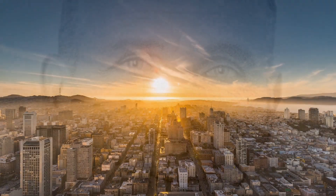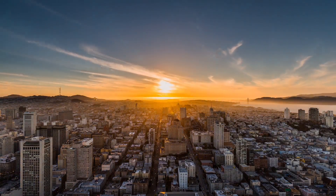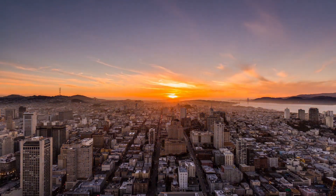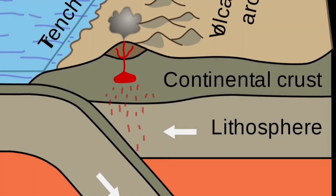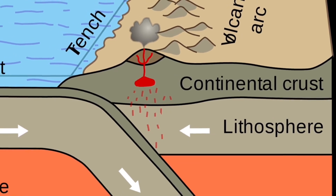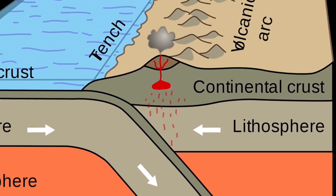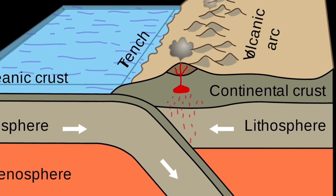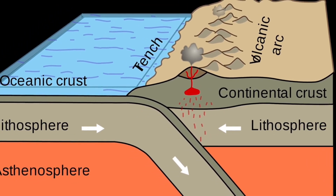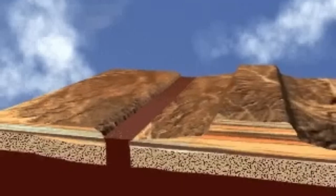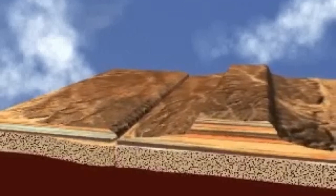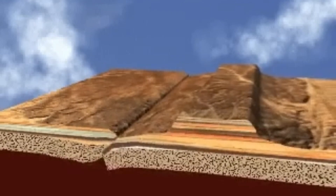It wasn't until the mid-20th century that Wegener's ideas were vindicated. Advances in the study of the ocean floor and the development of the theory of plate tectonics provided the missing piece of the puzzle. Scientists discovered that the Earth's lithosphere is divided into tectonic plates that float on the semi-fluid asthenosphere beneath them. The movement of these plates is driven by forces such as mantle convection, slab pull, and ridge push.